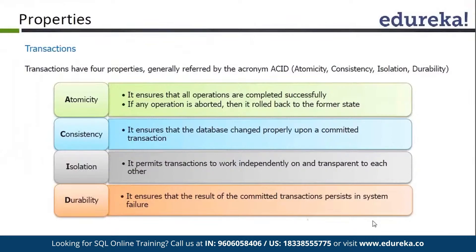We call it ACID — the ACID principle used in transactions. A means Atomicity. It simply means all the operations are completed successfully, or no operation is completed at all. If there is any issue with any of the transaction actions, we just roll back everything to maintain atomicity.